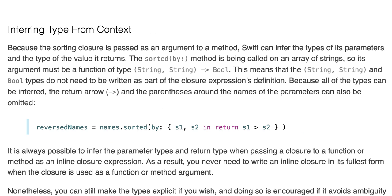Inferring type from context: Because the sorting closure is passed as an argument to a method, Swift can infer the types of parameters and the type of value it returns. So we don't need to specify the types. We can just do reversedNames equals names.sorted(by:) { s1, s2 in return s1 > s2 }. So s1, s2 are our string parameters, we use the in keyword to separate the body, and then the body is simply return s1 greater than s2. All of this goes inside the curly braces as part of the by argument, and all of that goes inside the parentheses.